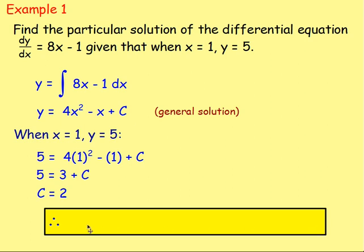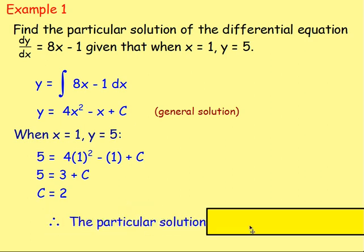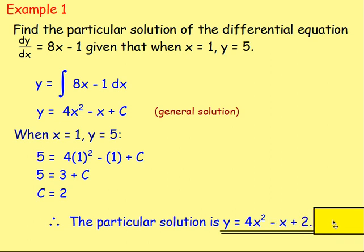What you can then do is say that your particular solution is going to be the exact same as the general solution. However, you now know the value of c, so instead of writing plus c, you write plus 2. And that is how you would solve that to get the particular solution.